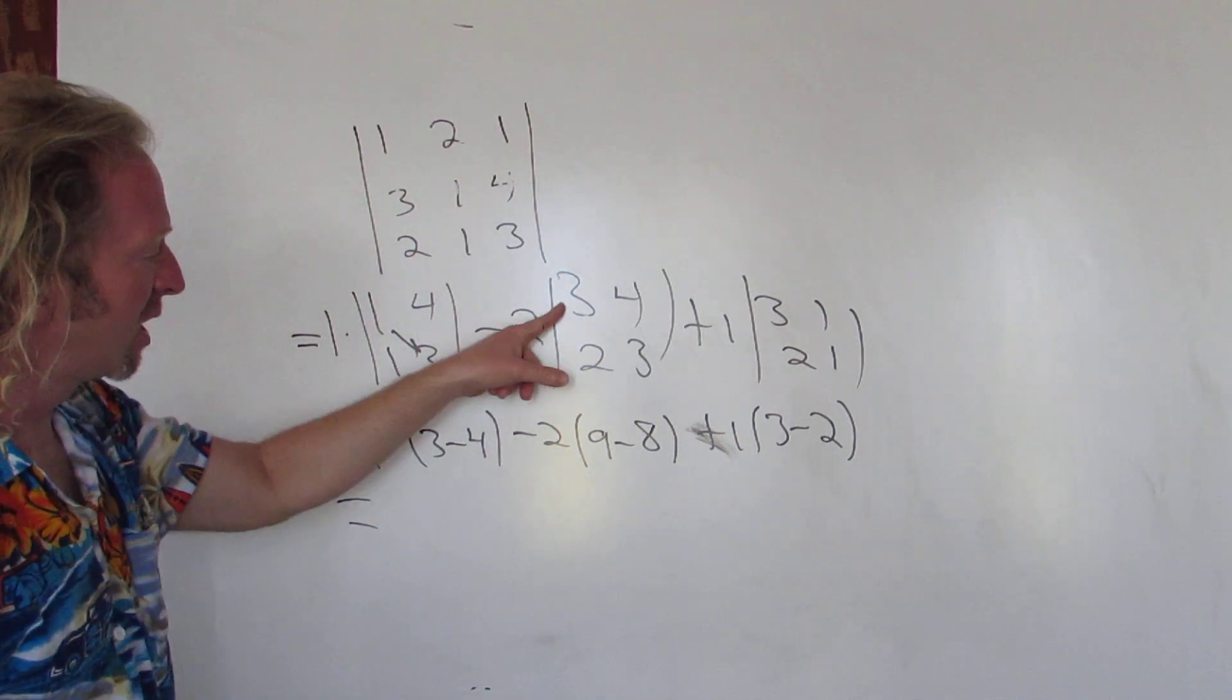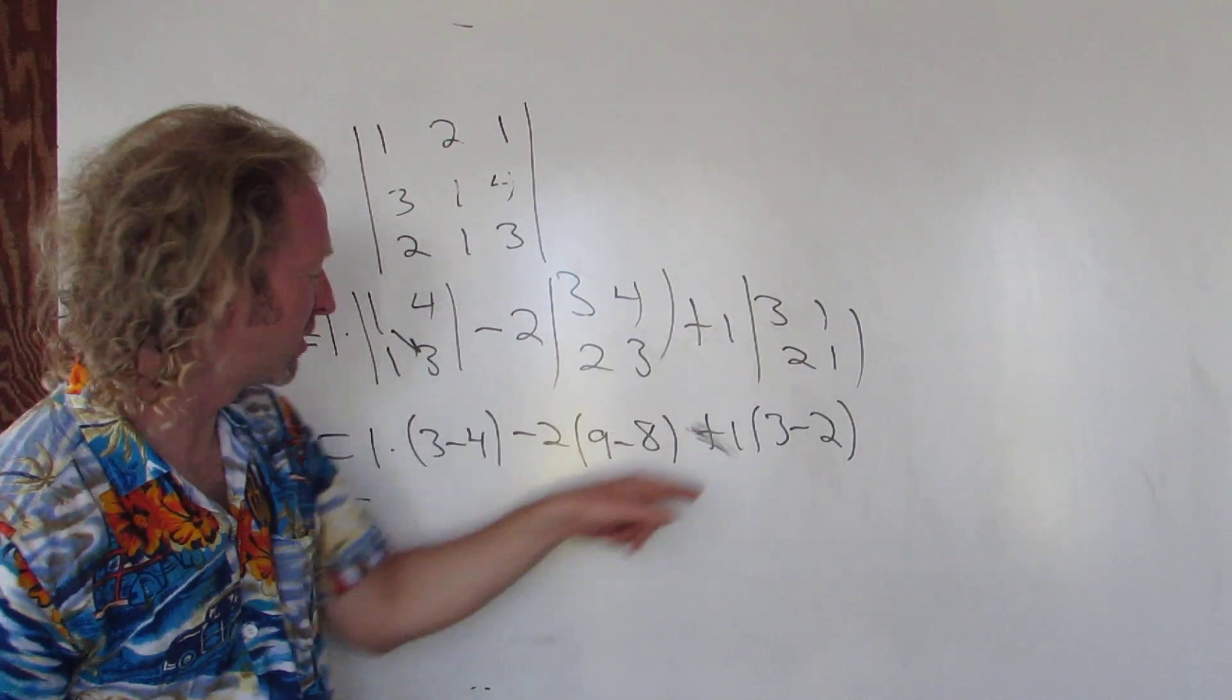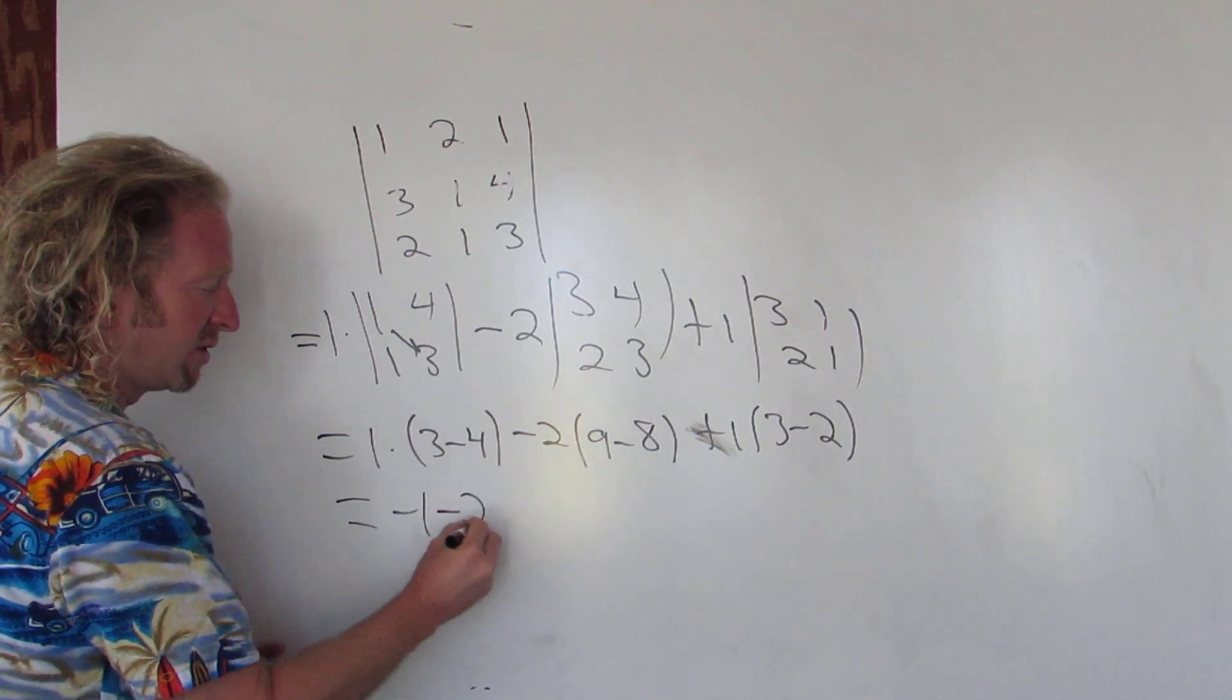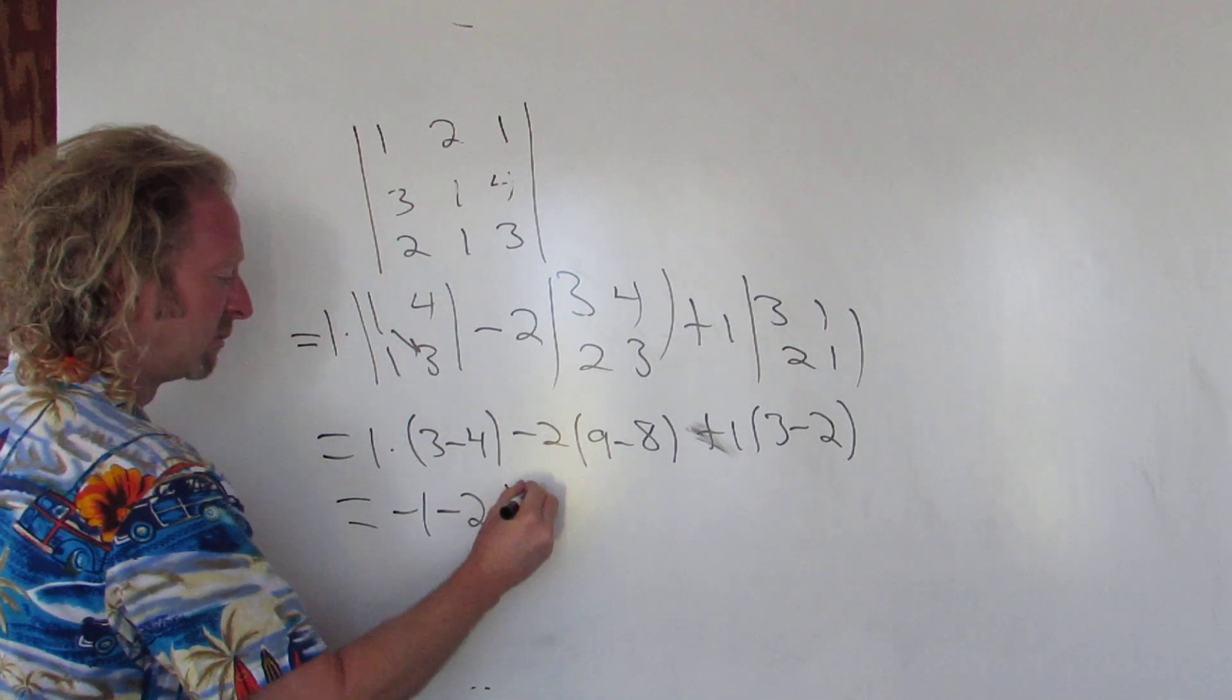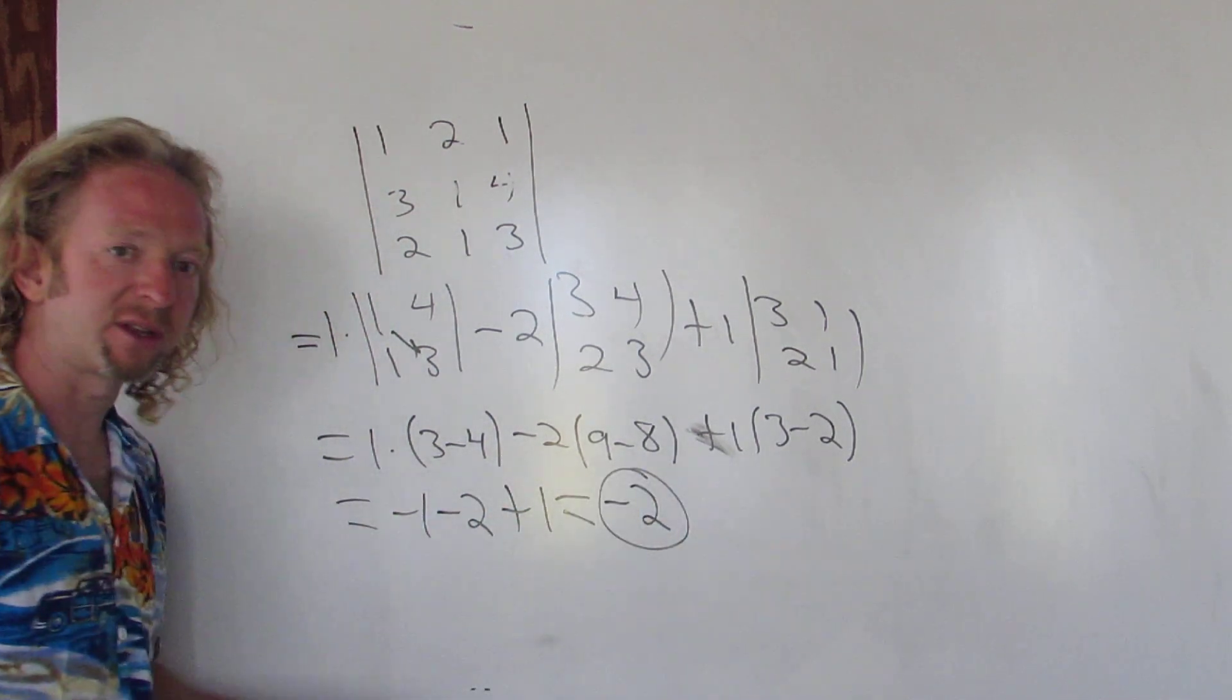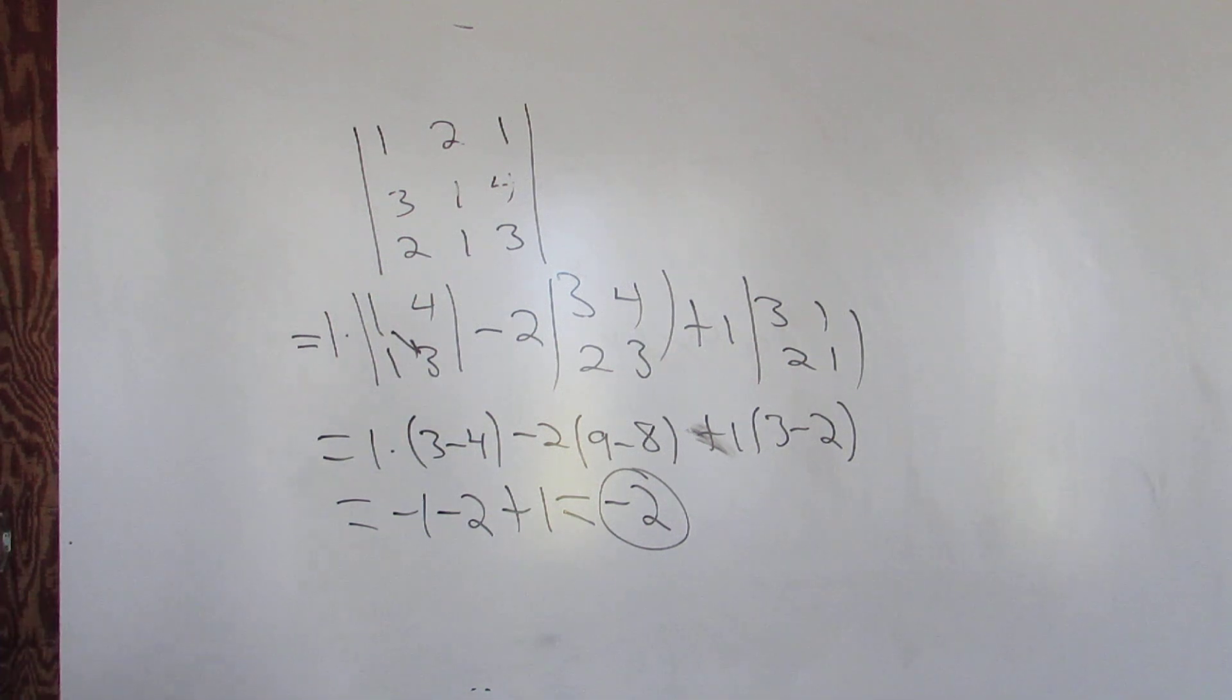Let's see: 3 minus 4, 9 minus 8, 3 minus 2. This is negative 1. This is negative 2 times 1, so that's negative 2. This is 1. So we get negative 3 plus 1, so we get negative 2. And that's how you find the determinant of a 3 by 3 matrix. This is negative 1, so we get positive 2. Notice, 3 times 1.